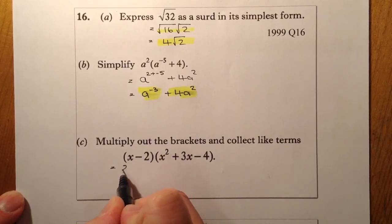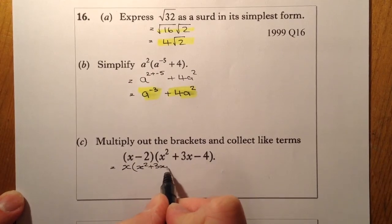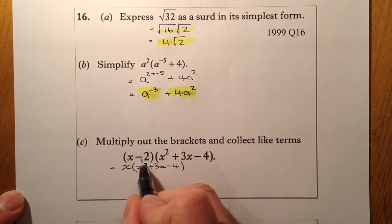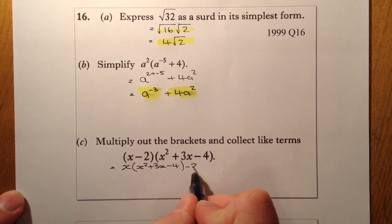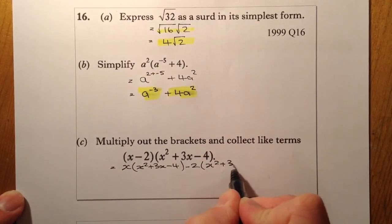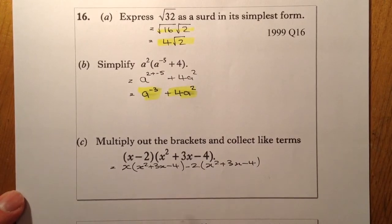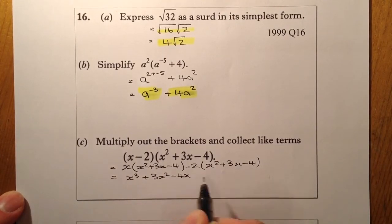So the x that's here, I'm going to put here. I'm going to write down this full bracket. Then I've got a minus 2 here, so I'll put minus 2 there. I'll write down this full bracket again. All I've got here is a single bracket to multiply out, so I'll go ahead and do that. So it's going to be x cubed plus 3x squared minus 4x.